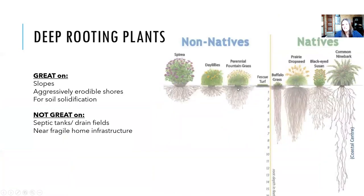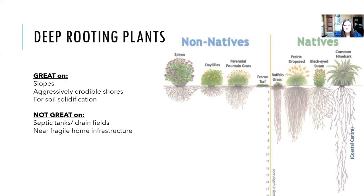Deep-rooting plants — even without a tap root — are great for slopes or aggressively erodible shorelines because they get well-established and help protect against erosion from lake level changes or human disturbance. They're often recommended for soil solidification. However, they're not suitable near septic tanks, drain fields, or fragile home infrastructure, as roots can permeate drainage systems and foundations. Native plants typically have deeper root systems than non-native plants, dramatically influencing erosion control potential.